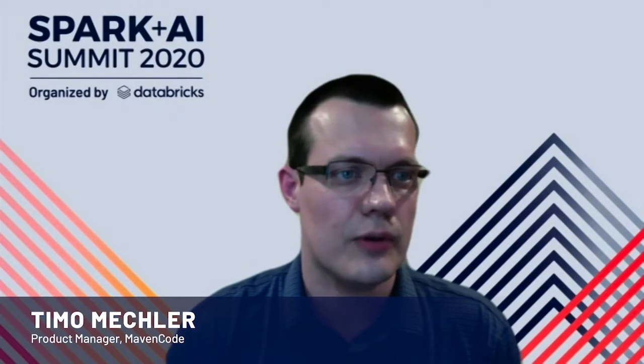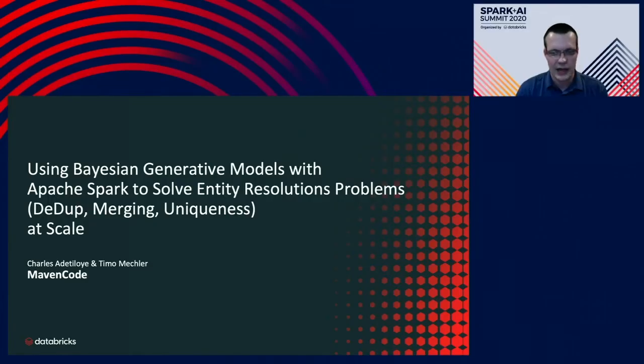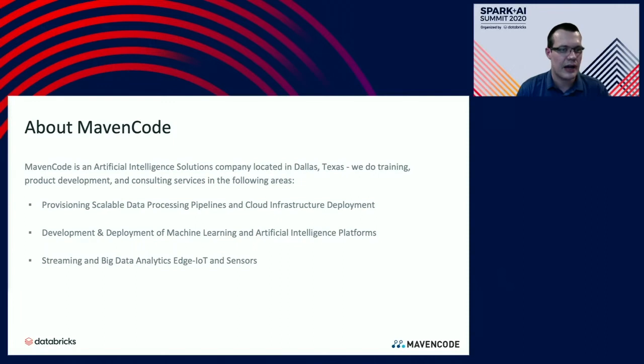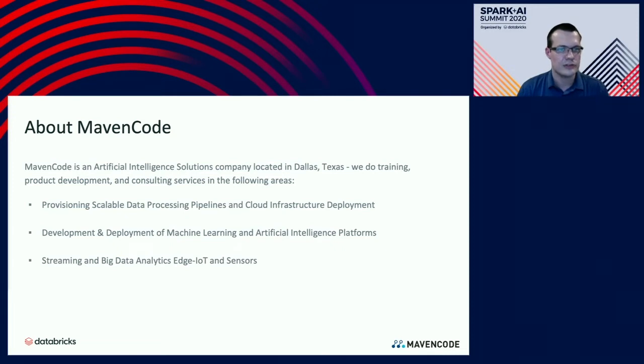Hello everybody. My name is Timo Meckler, and with me today is Charles Adetaloi. We're going to be talking to you about using Bayesian generative models with Apache Spark to solve entity resolution problems at scale. Before we get started, a little bit about us and our company. Charles and I both work for Mavencode, an artificial intelligence solutions company located in Dallas, Texas.